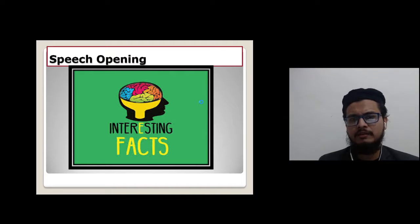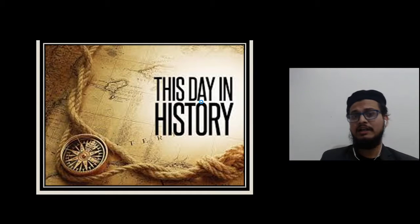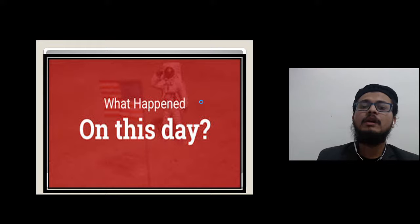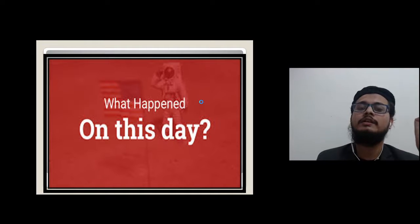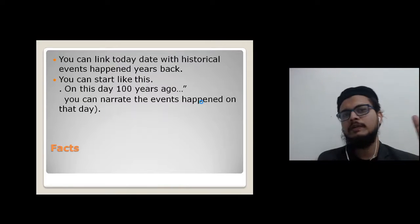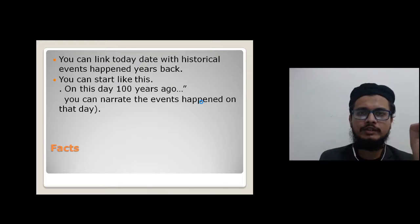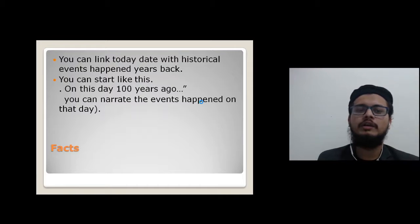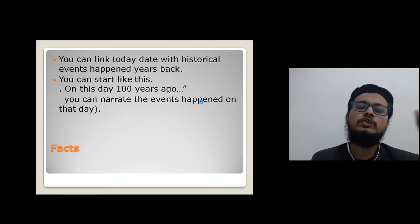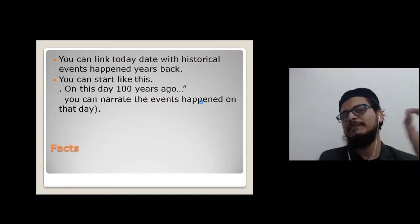Number one method: tell them interesting facts — something the audience doesn't know. You can start like, 'This day in history...' and tell them what exactly happened on this day. For example, 'On this day 50 years ago...' and then narrate the events which happened 10 or 50 years back on this very day.